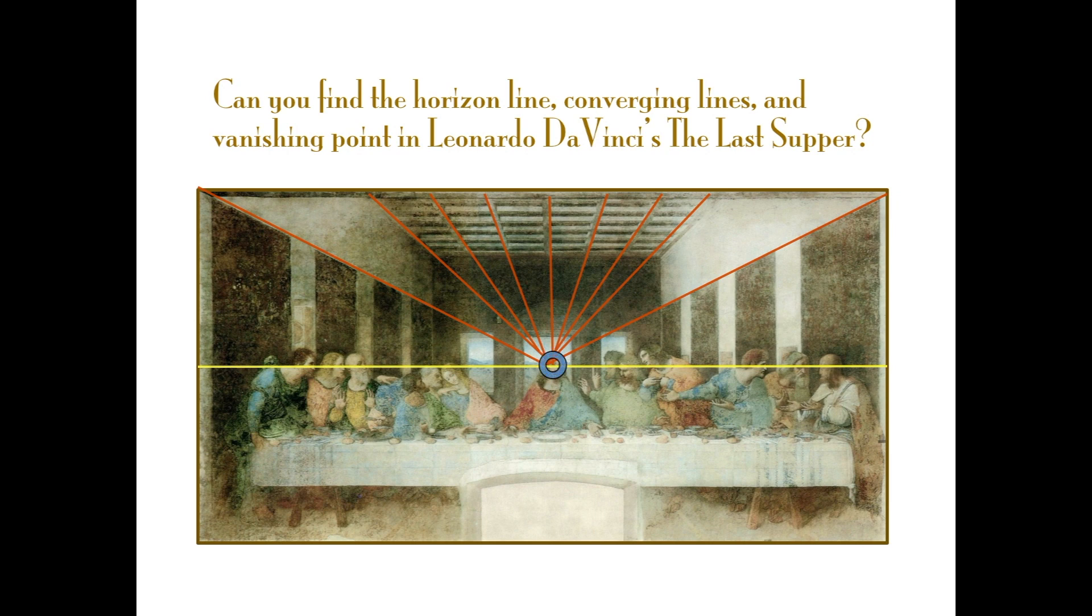So you can see that da Vinci used these techniques of linear perspective not only to make his painting look 3D, but also to draw our eye to the main figure.